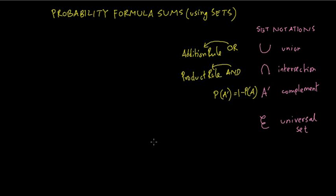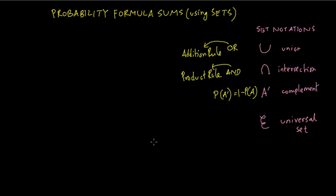The complement of a set asks: remove A from the universal set. If A has 1, 2, 3, and the universal set has 1 through 10, then A prime would be removing 1, 2, 3 from 1 through 10 — leaving 4, 5, 6, 7, 8, 9, 10. That would be A prime. So sets are collections — we are going to do the probability sum by considering each probability as a collection.